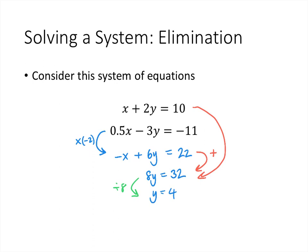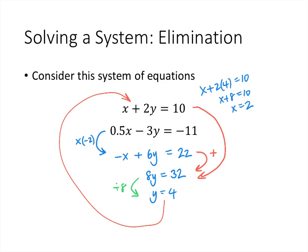Now we take y equals 4 and plug it back into one of the original equations — let's use the first equation. Since y equals 4, the first equation becomes x plus 2 times 4 equals 10, so x plus 8 equals 10, which gives x equals 2. We get the same solution as before, (2, 4), but using a different method.